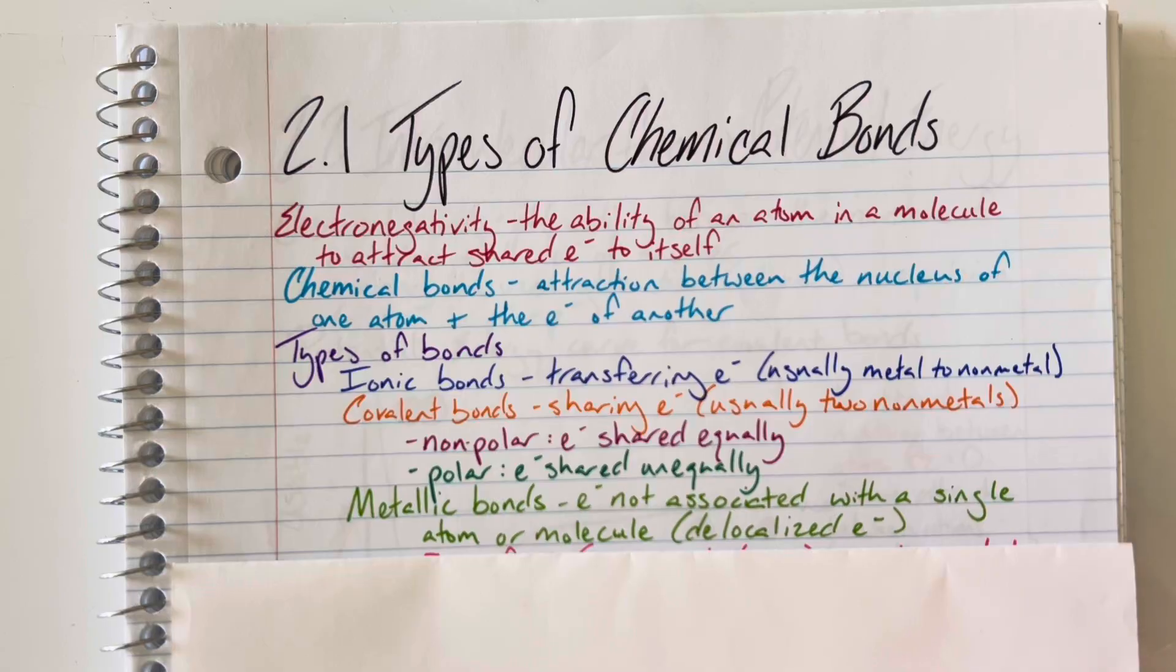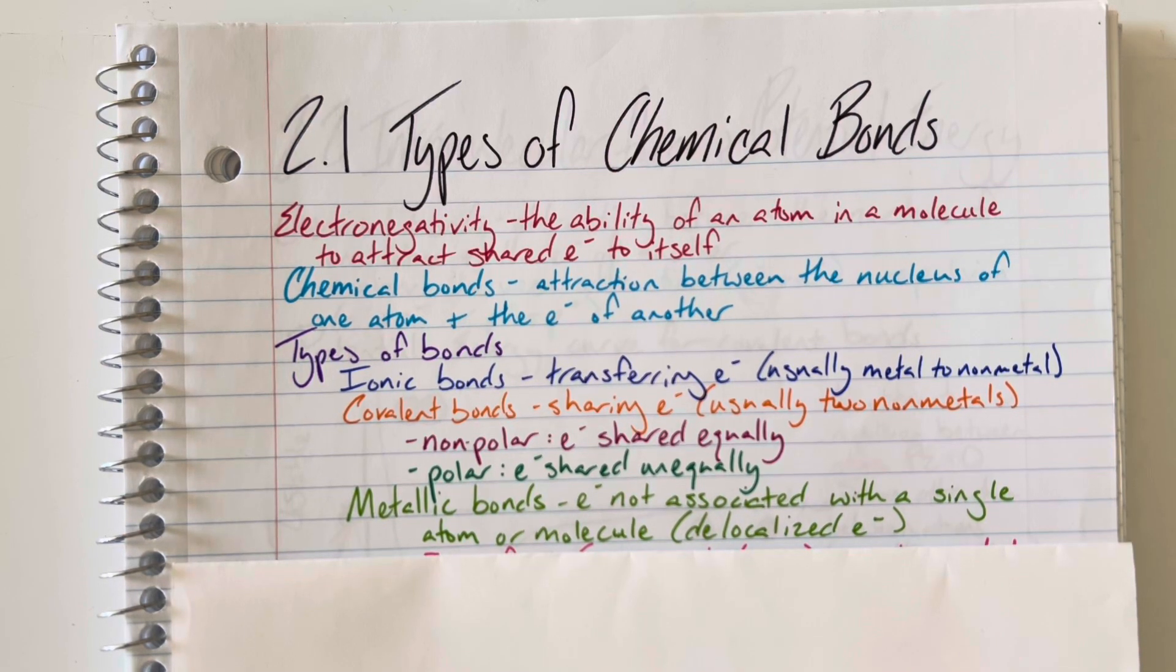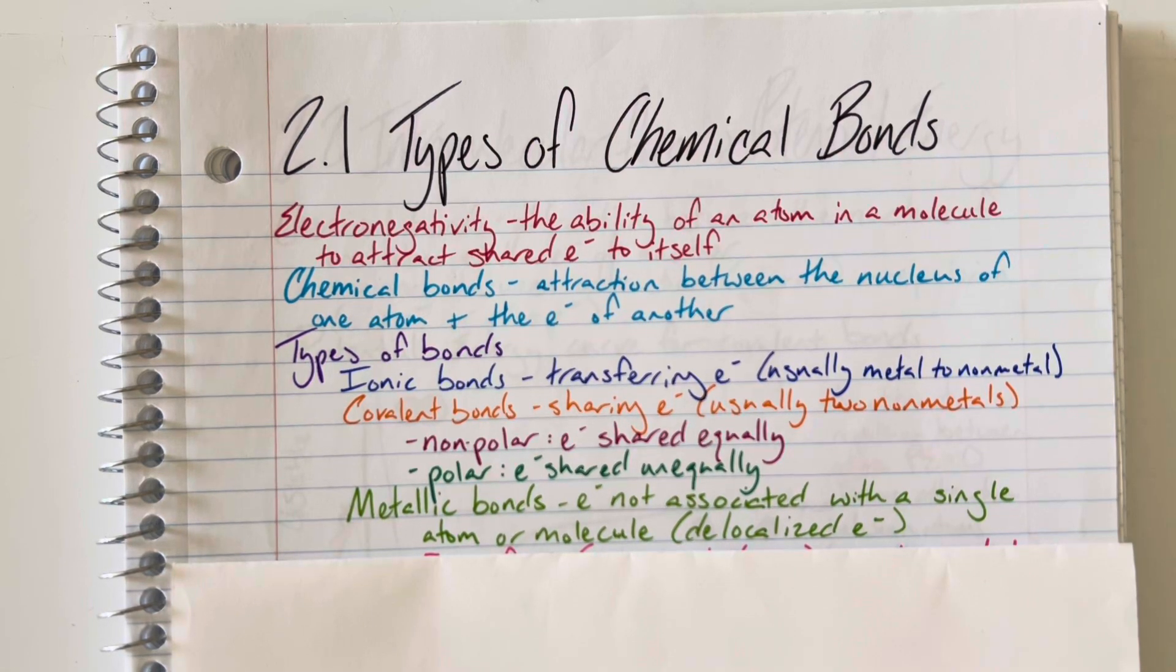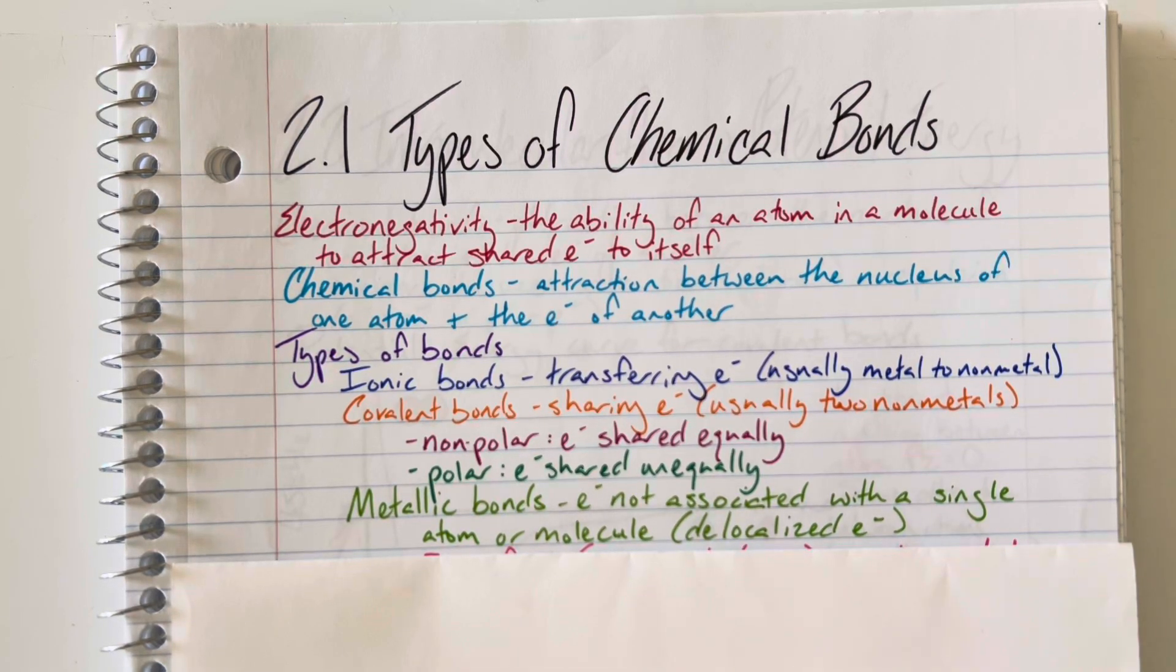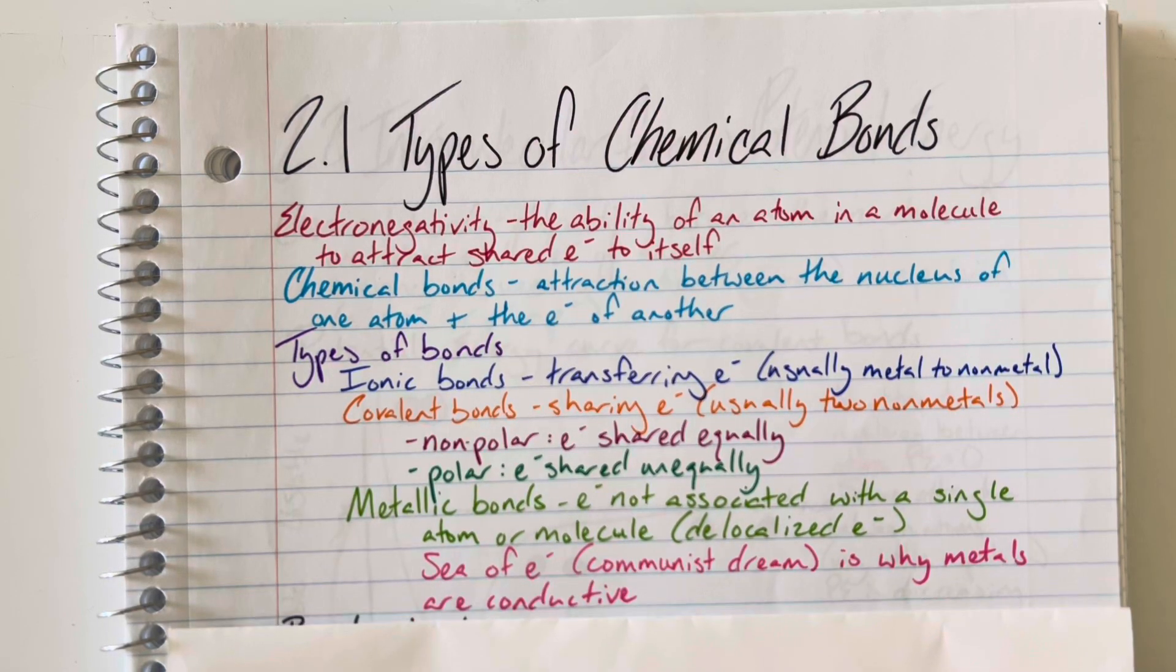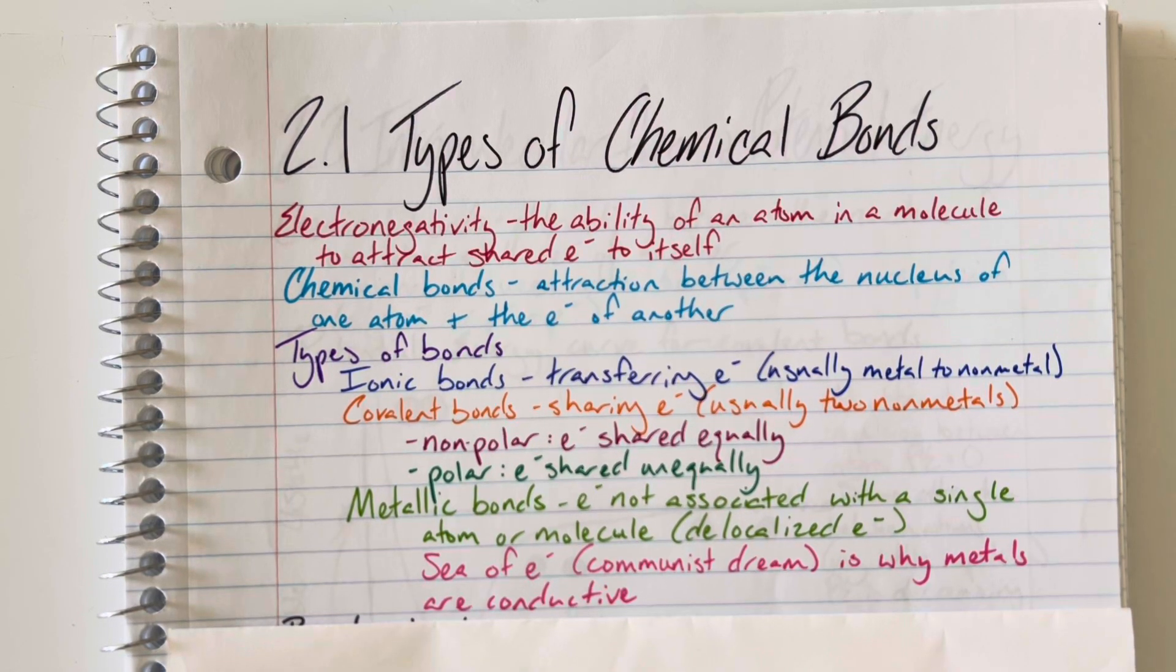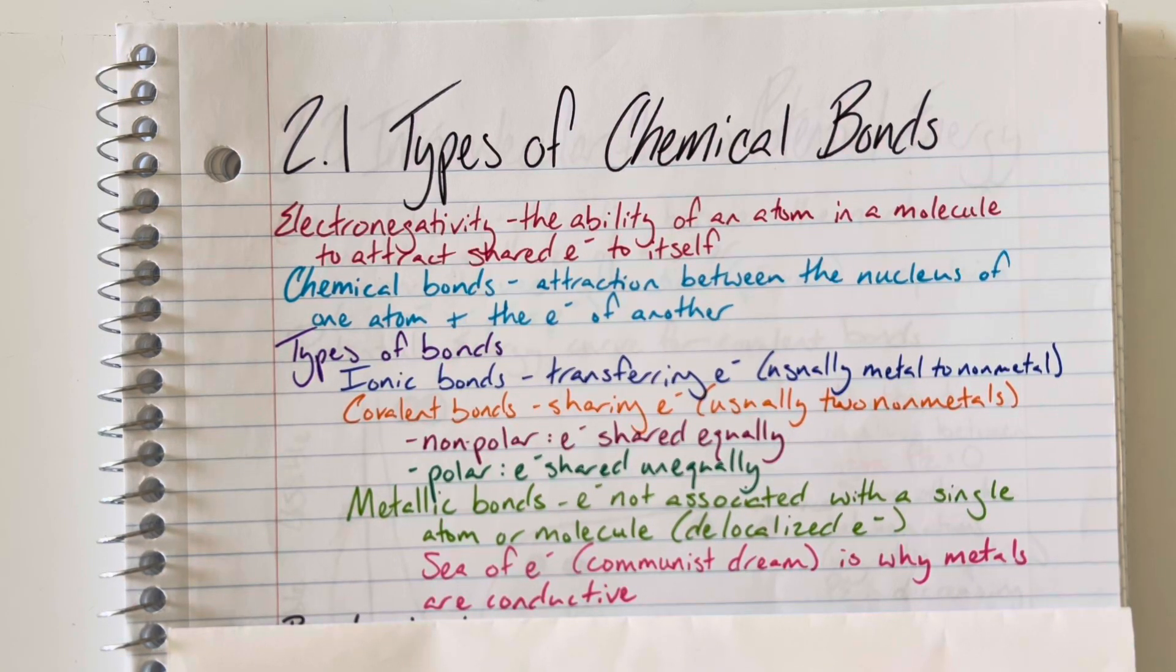Metallic bonds aren't true bonds. Instead, the electrons are not associated with a single atom or molecule. They are delocalized in what is known as a sea of electrons. They're not bonds in terms that covalent bonds and ionic bonds are bonds, but they're just kind of shared equally amongst all of the metals present. That collective of electrons are called the sea of electrons.